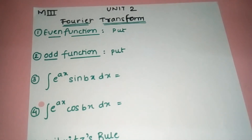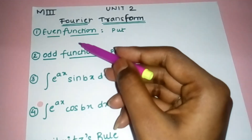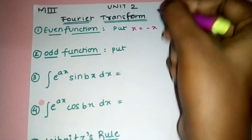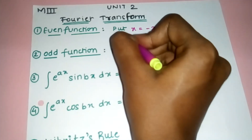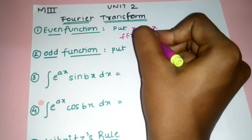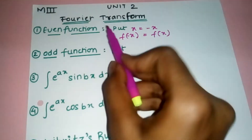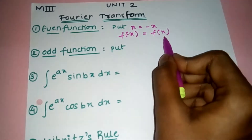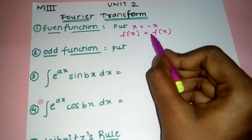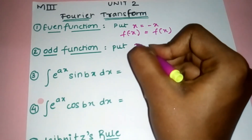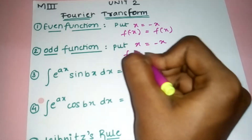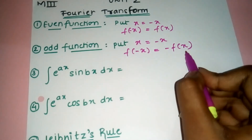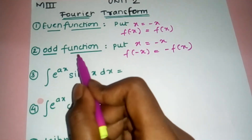The first topic is even functions. In an even function, we put x equal to minus x — if f(minus x) equals f(x), it is called an even function. For an odd function, when we put x equal to minus x, f(minus x) comes out to be minus f(x), so that is called an odd function.